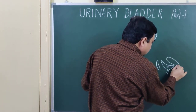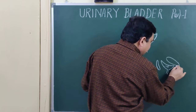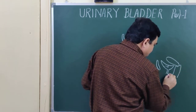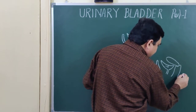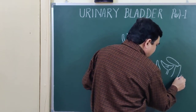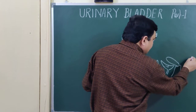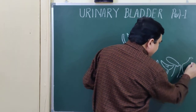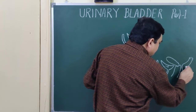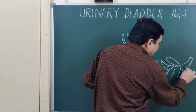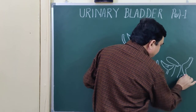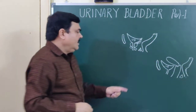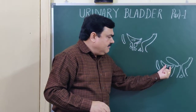This is the uterus. This is the cervix. This is the vagina. This is the perineal body. Here is the position of the rectum and anal canal. So this is the ureter in the female.